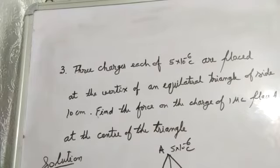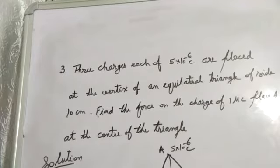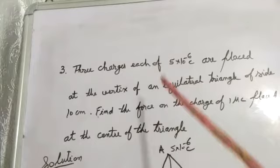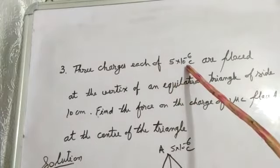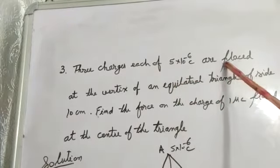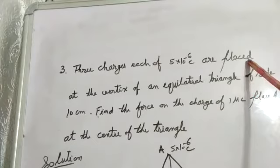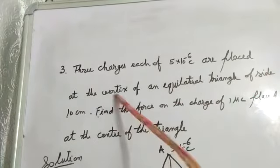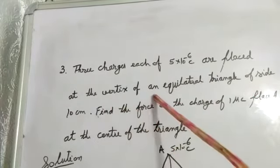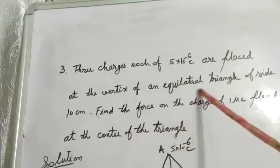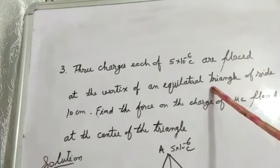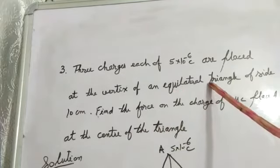Three charges, each of 5 into 10 power minus 6 coulomb are placed kaha - at the vertex of an equilateral triangle. Equilateral triangle means three sides equal hai.